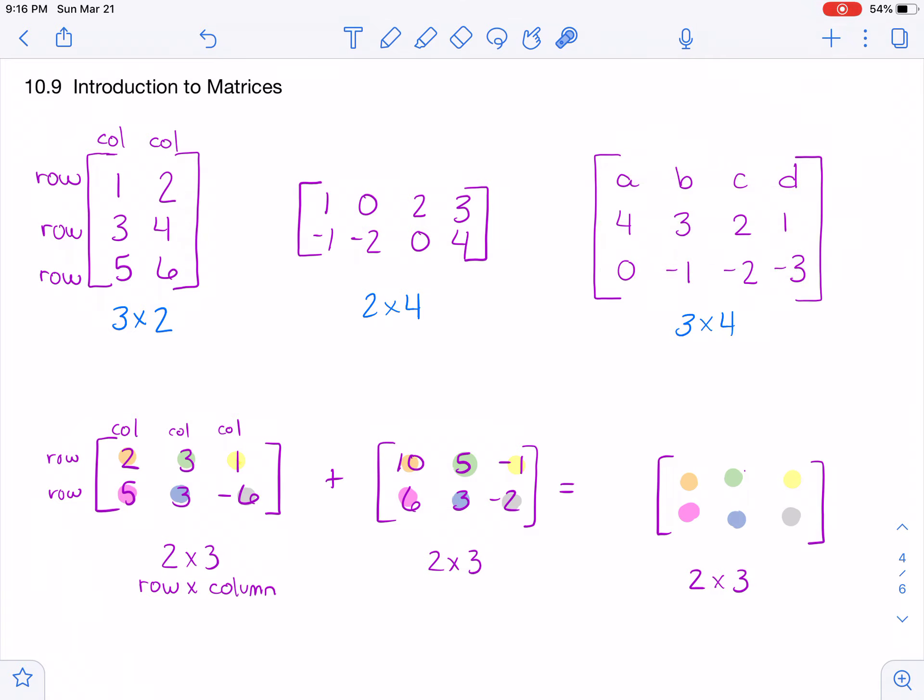And as you can see, that one I have letters in as well, so sometimes you will have letters in your matrices. And you can have positive numbers, negative numbers, zeros, all of those could be in your matrices. Also, you could have decimals or fractions as well, but we're not going to do a whole lot with those.